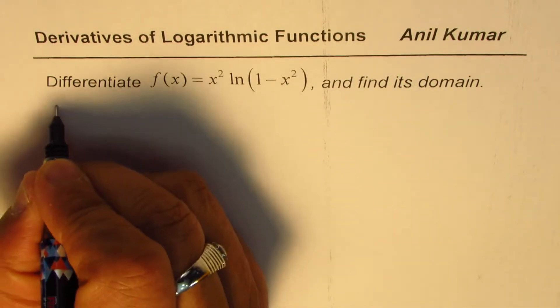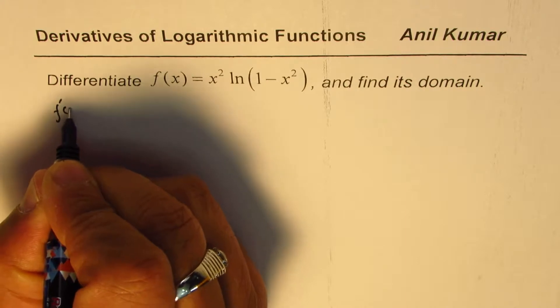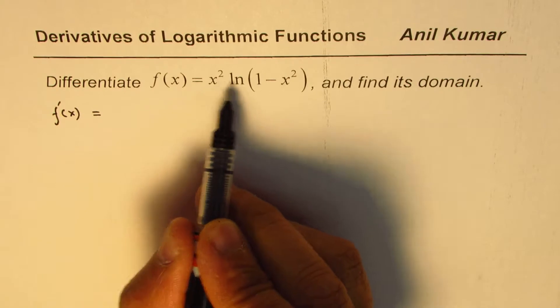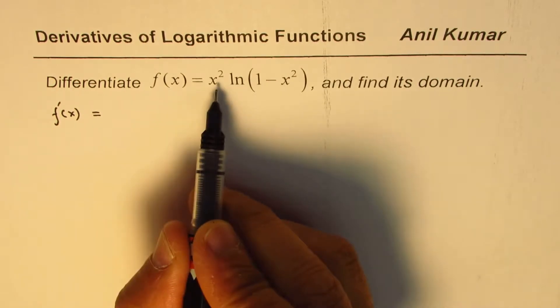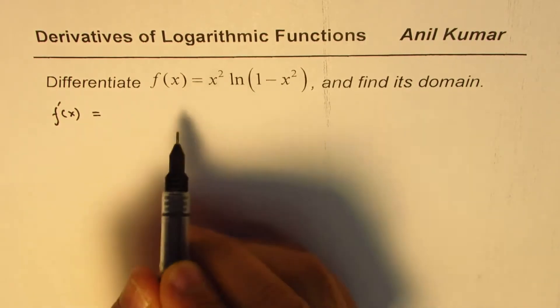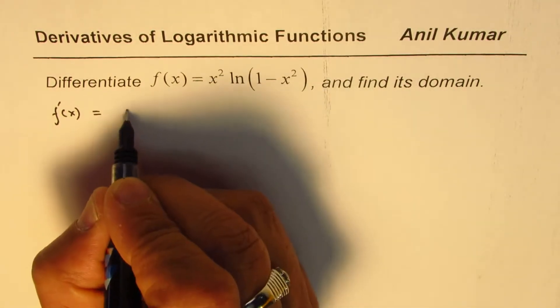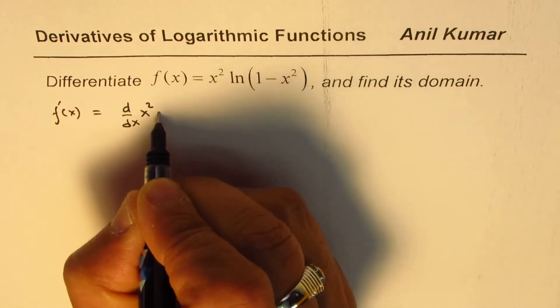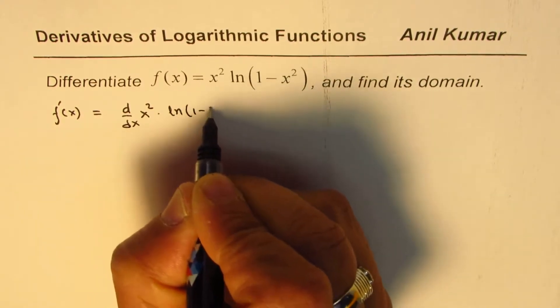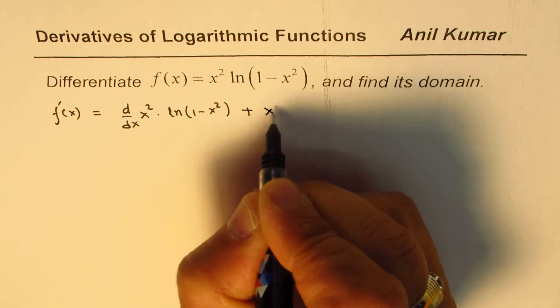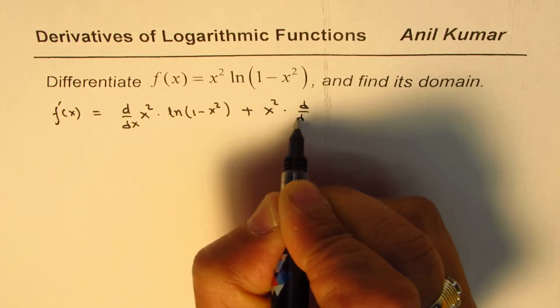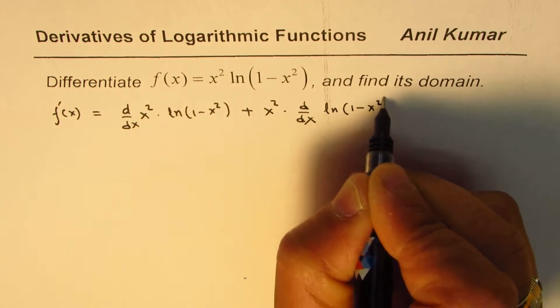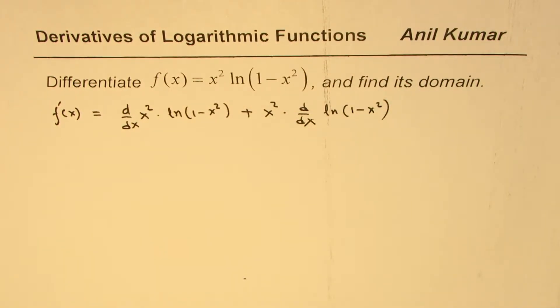So let's do the differentiation part first. So derivative of this function is, this is product of two functions, so we can apply the product rule. So that is to say, d dx of x squared times ln 1 minus x squared plus x squared times derivative of ln 1 minus x squared. So that is the product rule.